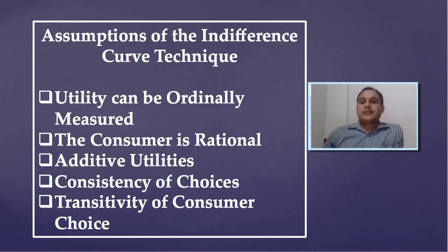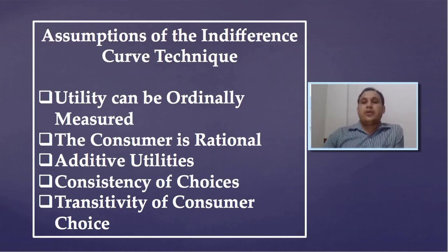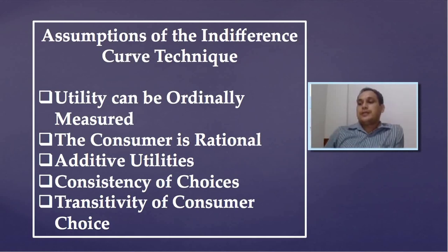The next assumption is additive utility — that means utility can be added. The total utility of a consumer is the addition of utility enjoyed by consuming different commodities. In other words, the quantities of commodities consumed determine the total utility of the consumer.